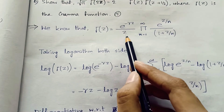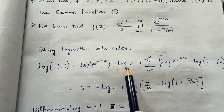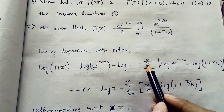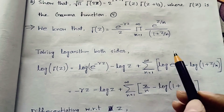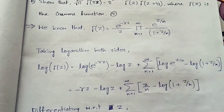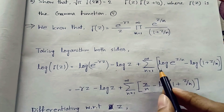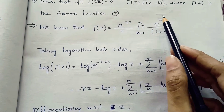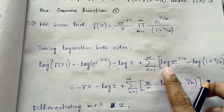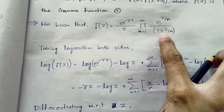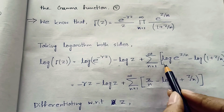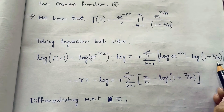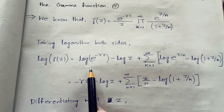Since log(a/b) = log(a) − log(b), this becomes log(a) minus log(b). The product of infinite terms, when log is applied, becomes a summation, since log(ab) = log(a) + log(b). Inside the summation, we separate numerator and denominator, giving log(e^(z/n)) minus log(1 + z/n).